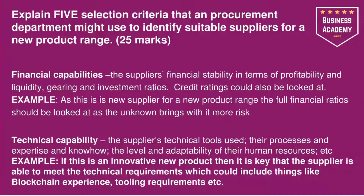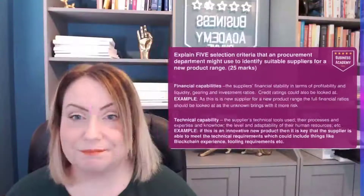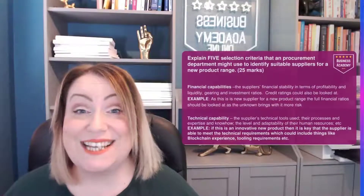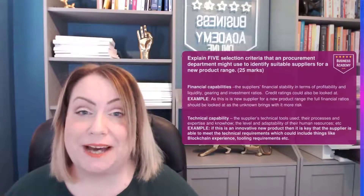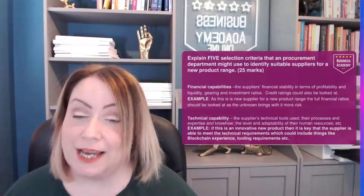You don't have to do it in one specific way. You could say 'the first selection criteria, the second selection criteria', or you could just put headers — for example, put 'Financial Capabilities' as a header and then start to write your essay paragraph underneath it. So those are the first two selection criteria; we have to move on and look at the following three.